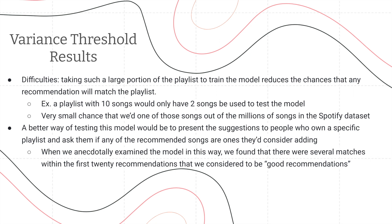Some of the difficulties we found here is that taking such a large portion of the playlist to train the model reduces the chances that the recommendations will match the ground truth of the other songs on the playlist. For example, with a playlist of 10 songs, only two songs would be used to test the model. A better way of testing this model would be to present the suggestions to the people who own a specific playlist and ask them personally if the songs we're recommending are ones they'd consider adding. When we anecdotally did this with one of our own playlists, we found that there were several matches within the first 20 recommendations that were considered to be good recommendations.